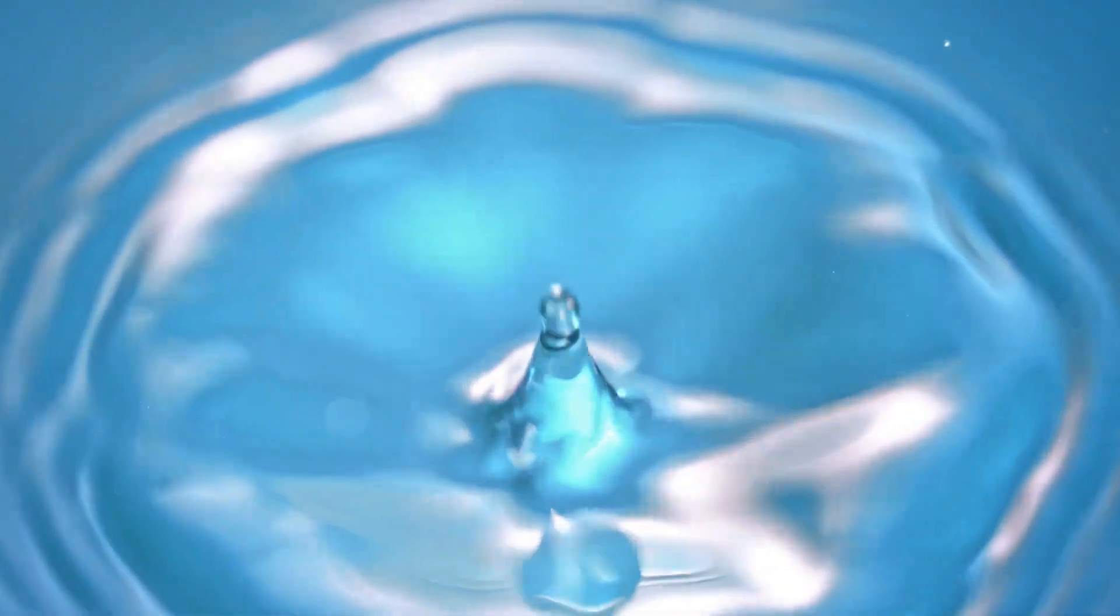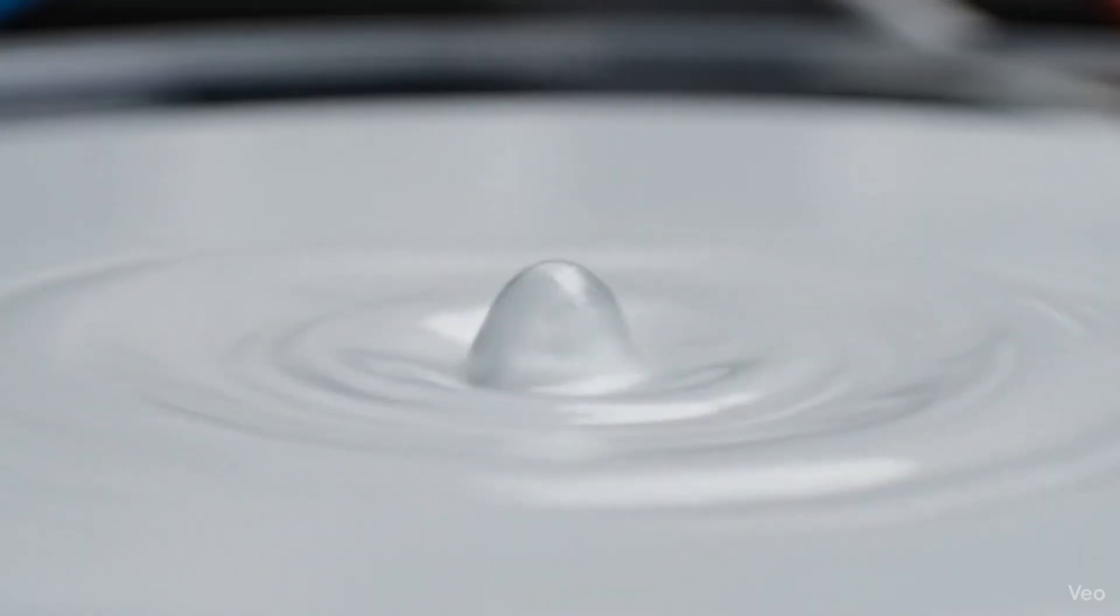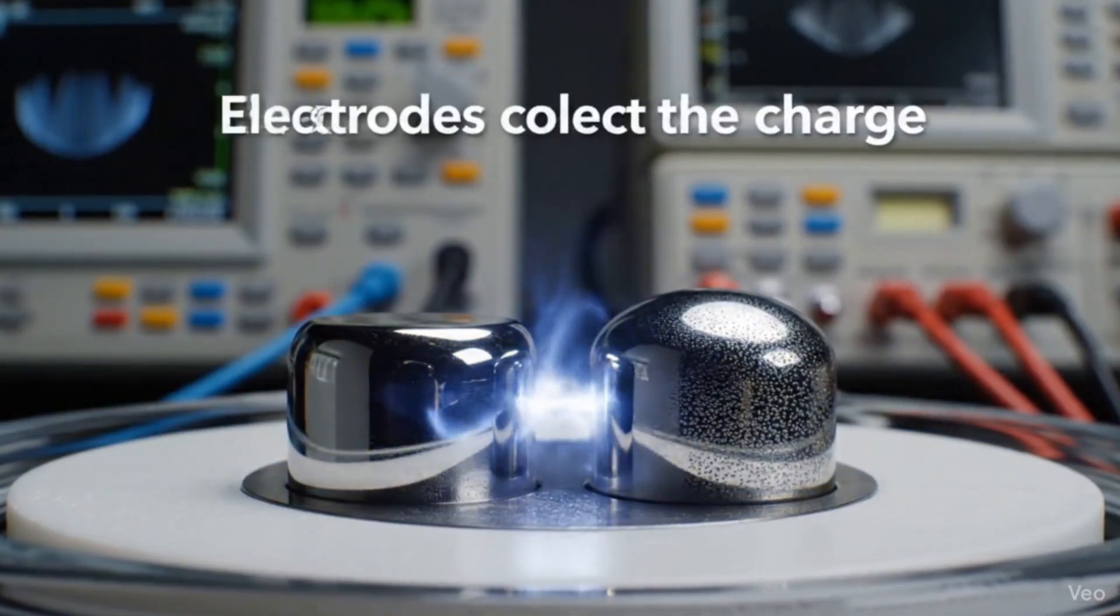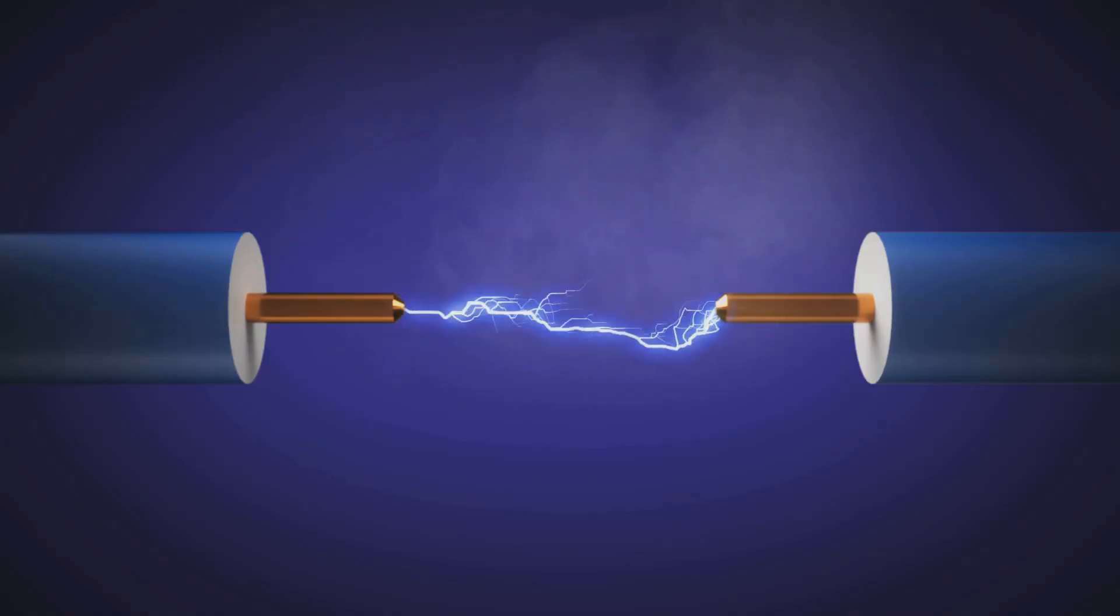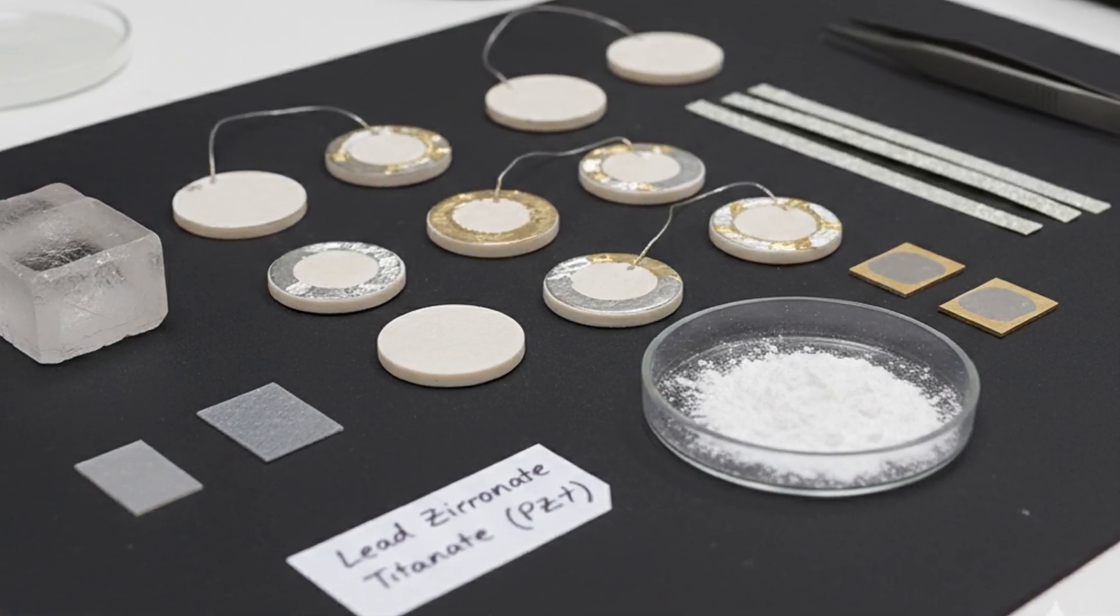The kinetic energy of a falling raindrop provides that exact kind of stress. When a drop strikes a piezoelectric material, the impact creates a tiny vibration that squeezes the crystal structure, producing a small pulse of electricity. Common materials used for this include a ceramic called lead zirconate titanate, PZT, and a more flexible polymer film known as PVDF.